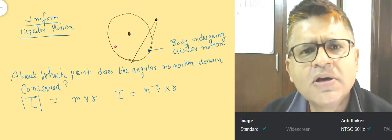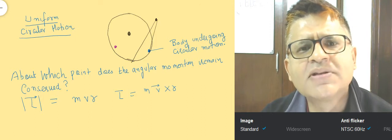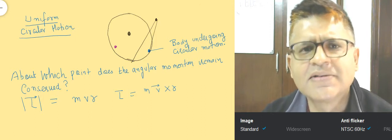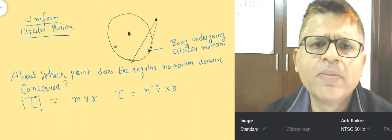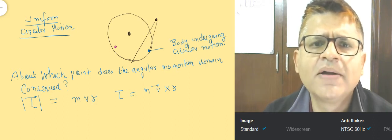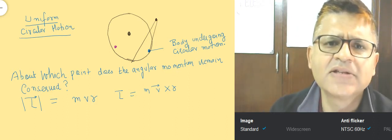If you calculate mvr about the center, it is then that it is conserved. If you try to calculate the angular momentum about any other point, the radius vector of the formula mvr will keep on changing.